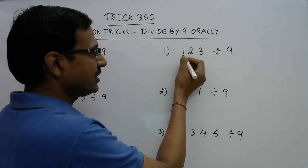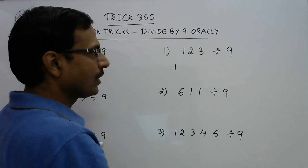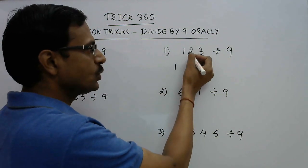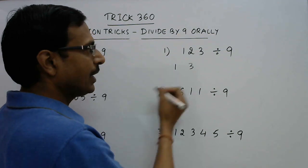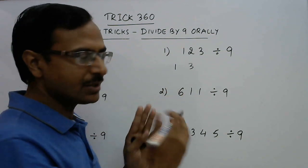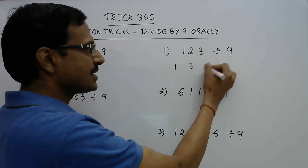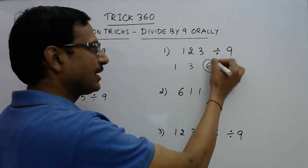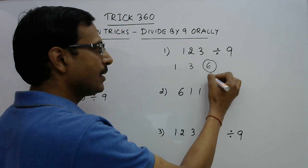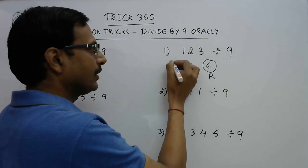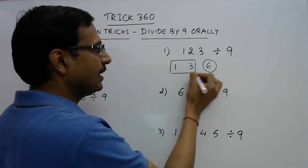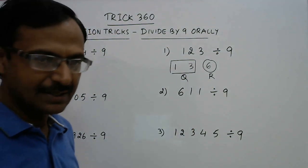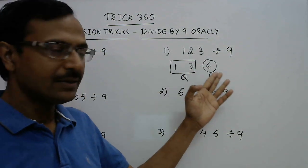The first digit is to be written as it is, and this is to be added to the next digit. So 1 plus 2 is 3, and carry on with this procedure — 3 plus 3 is 6. The last digit will give you the remainder, and 1 and 3 — 13 — gives you the quotient. So 13 is the quotient and 6 is the remainder.